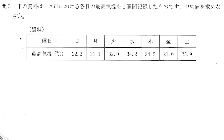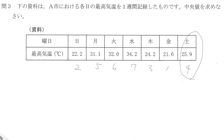This table shows the maximum temperature of each day of a given week, and you need to calculate the median of these values. To calculate the median, you need to reorder these values in terms of magnitude. Starting with the smallest value, 21.6, and counting up: 1, 2, 3, 4, 5, 6, 7. We have 7 days, so the value in the middle would be number 4. The median would be 25.9.